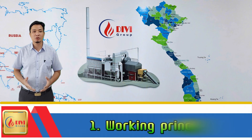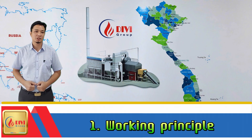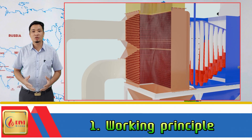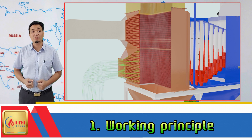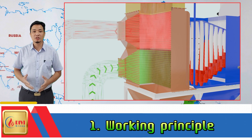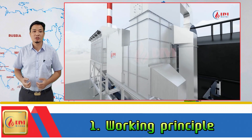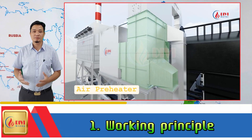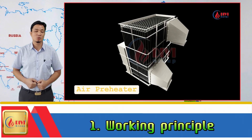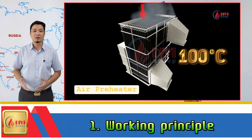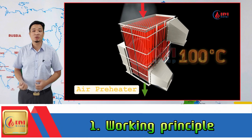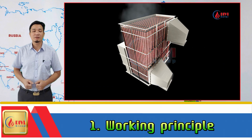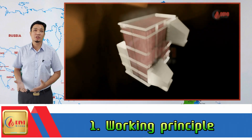Firstly, the working principle of the air preheater. The air preheater is a device that utilizes the excess heat from boiler exhaust gases to warm the air before it is supplied to the combustion chamber. This process not only supplements oxygen for the combustion chamber but also enhances the fuel's combustion efficiency. The air preheater can heat air to 100 degrees Celsius, making it particularly effective when using fuels with high moisture content or low ignition properties. As a result, it significantly improves the boiler system's efficiency.